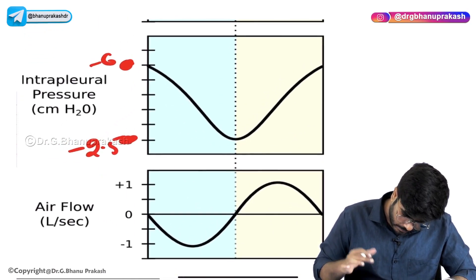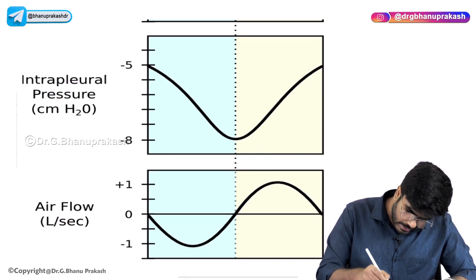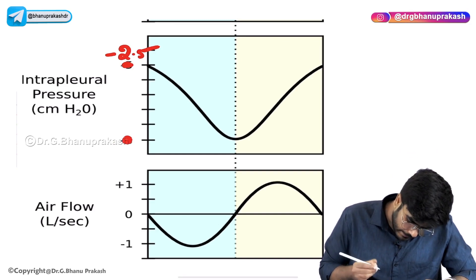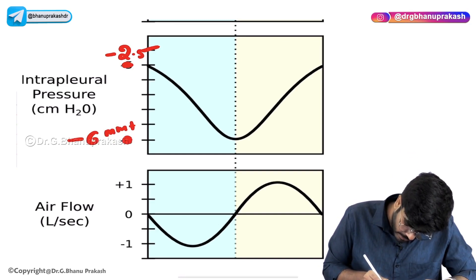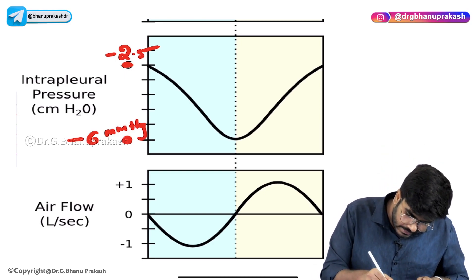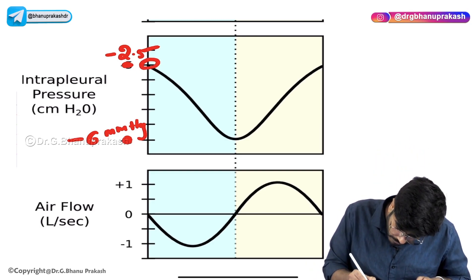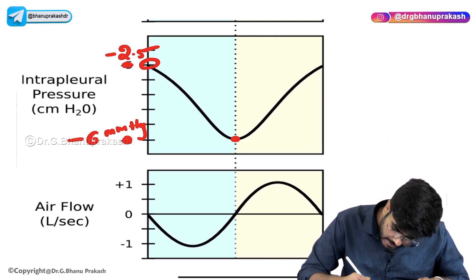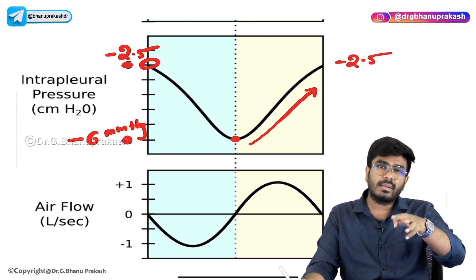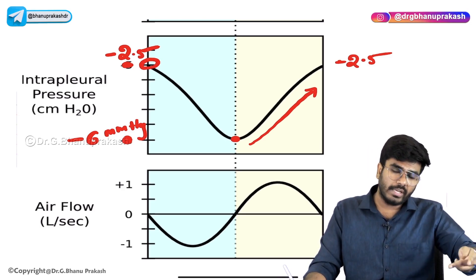Let's talk about intra-pleural pressure. The normal intra-pleural pressure is minus 2.5 mmHg and minus 6 mmHg. During inspiration, the intra-pleural pressure moves from minus 2.5 to minus 6 mmHg. During expiration, it moves from minus 6 back to minus 2.5 mmHg. So intra-pleural pressure changes from minus 2.5 to minus 6 during inspiration, and from minus 6 to minus 2.5 during expiration.